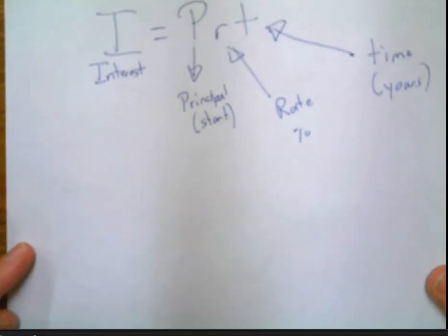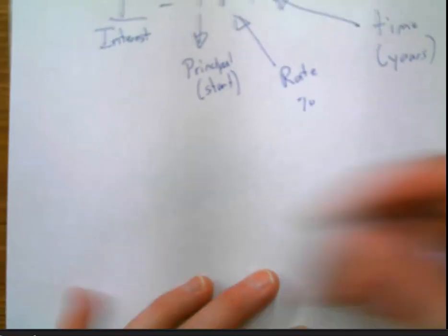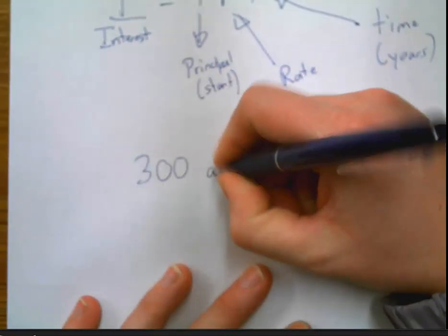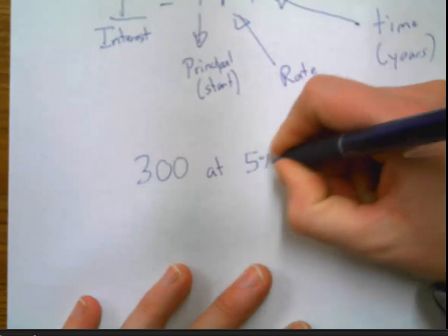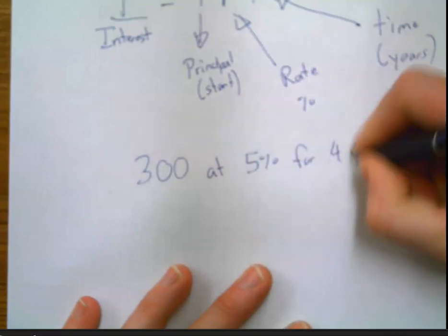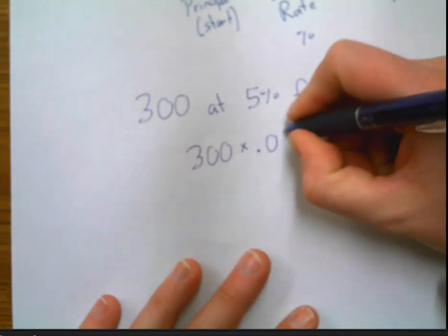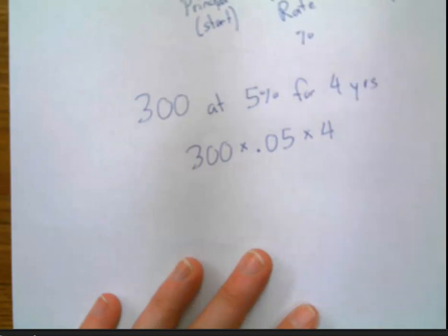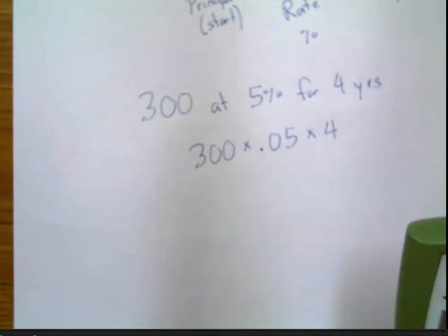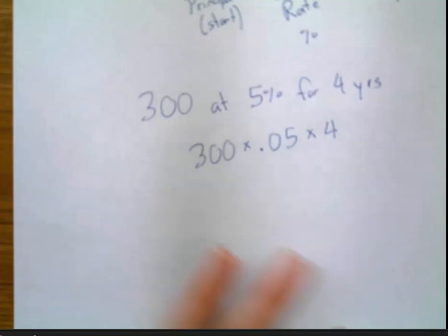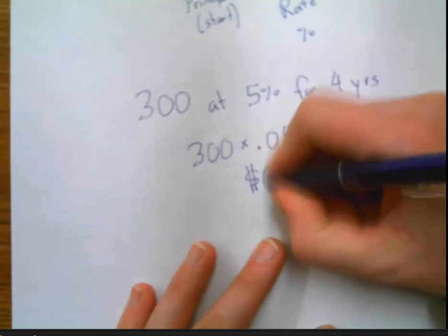So knowing all of that, the basic one that we did in class, we say, you've got $300 at 5% interest for four years. And you say $300 times .05 times four. $300 times .05 times four. And that gives us $60 for interest.